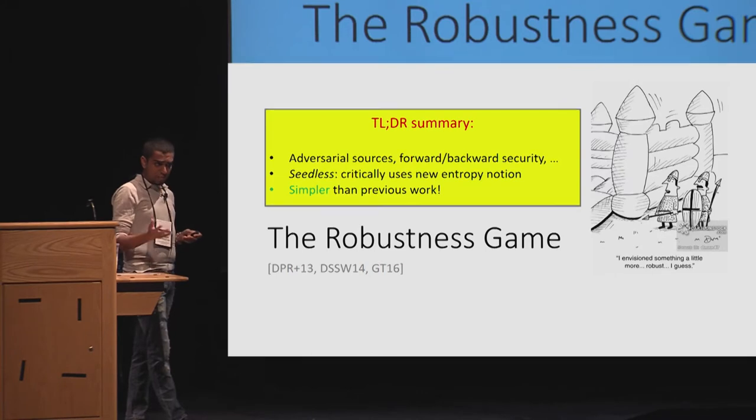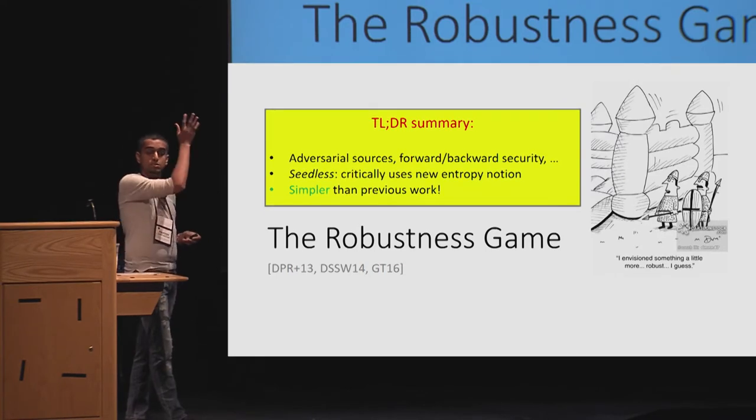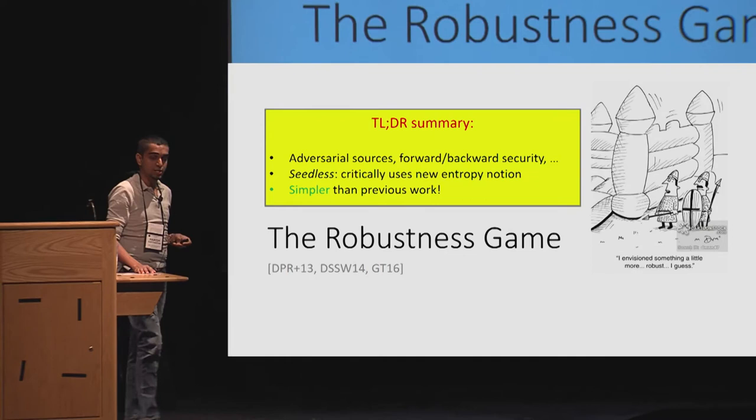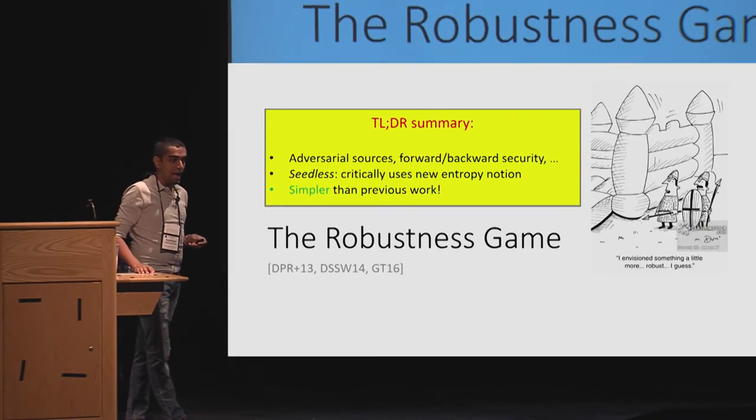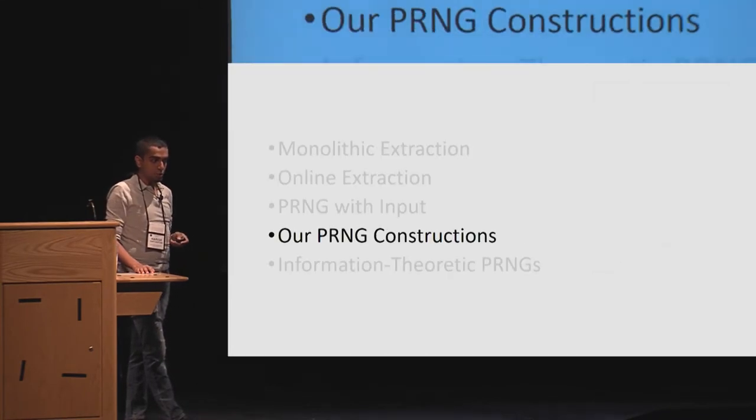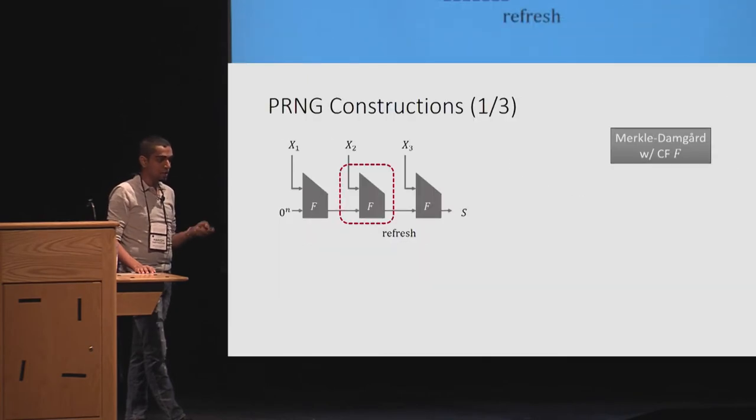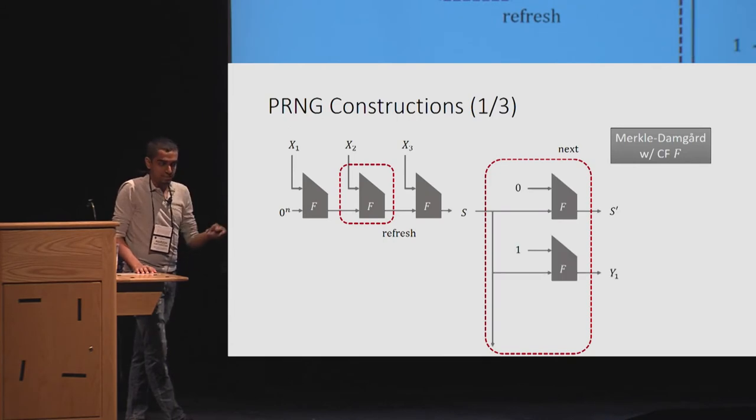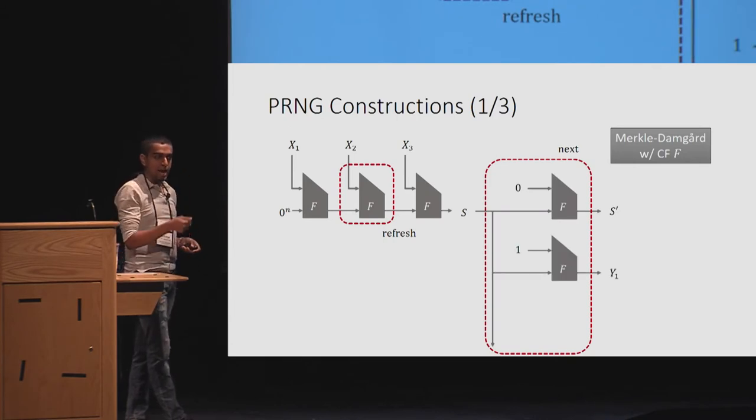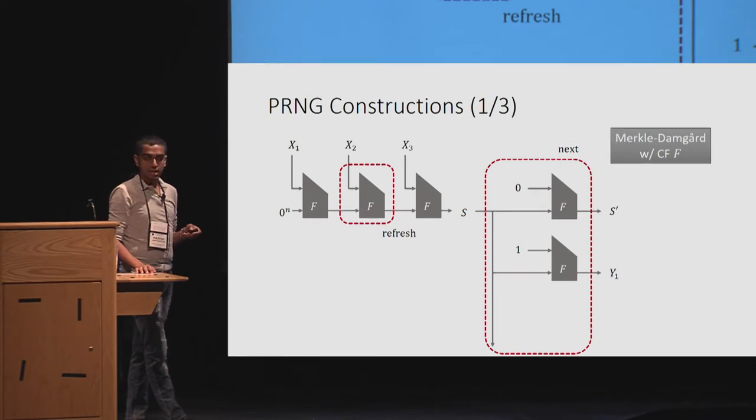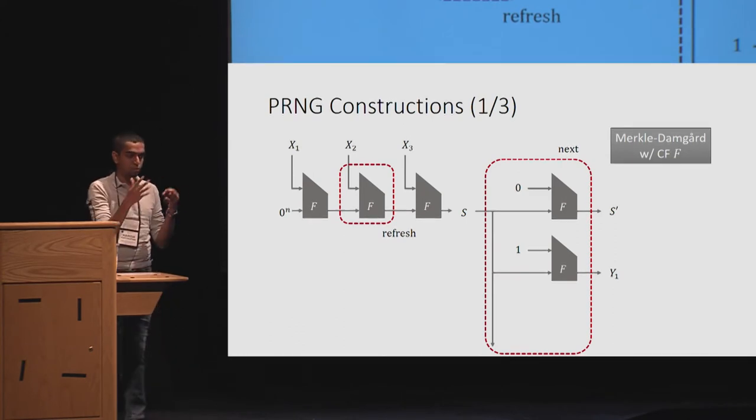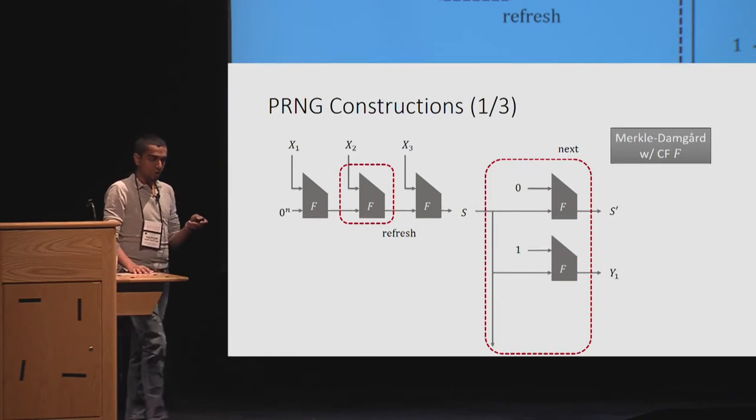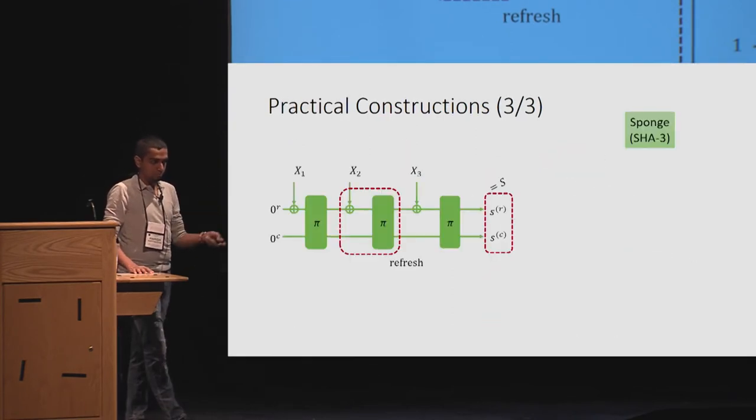It's seedless, and we critically use the notion that we mentioned before where we condition on the set of queries that it has made. And it's simpler than previous work. These are our PRNG constructions. I don't have time. But I'm just going to give you a flavor of the Merkle-Damgard with the random compressing function f. The refresh is similar to what we saw before. But the next actually does this, where it takes the final state. And it sets a new state to be f of 0 comma s. And it sets the new random bits to be f of 1 comma s.